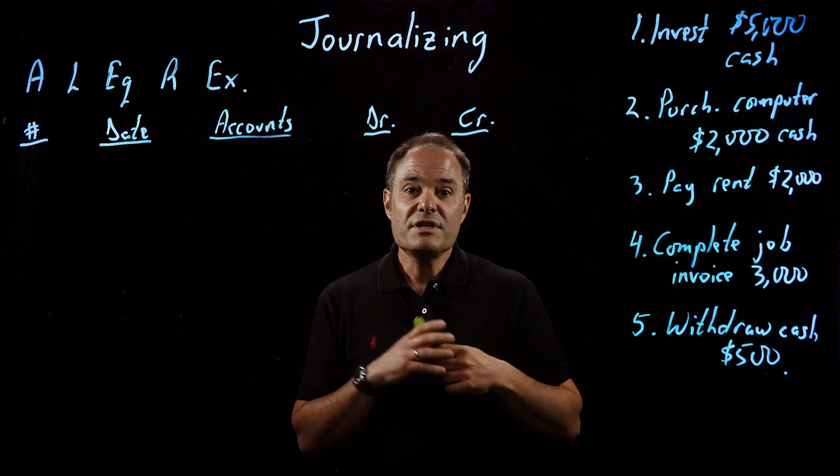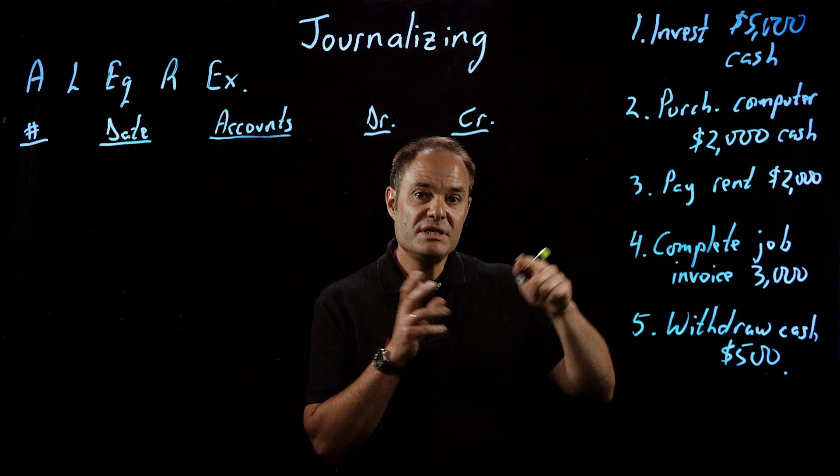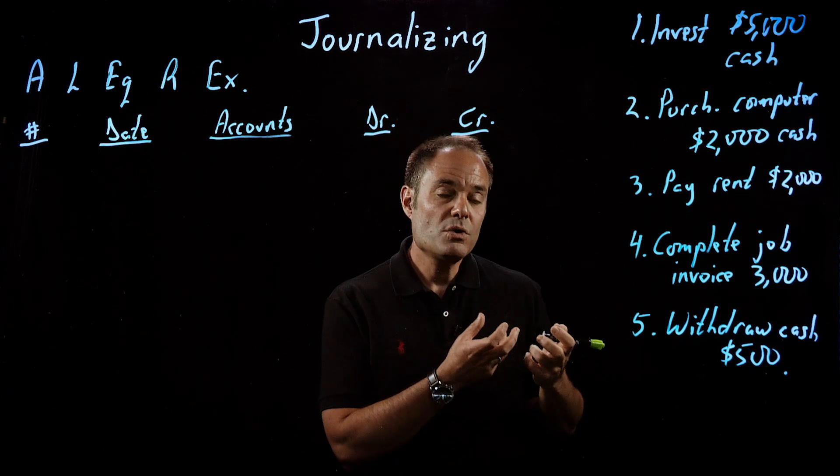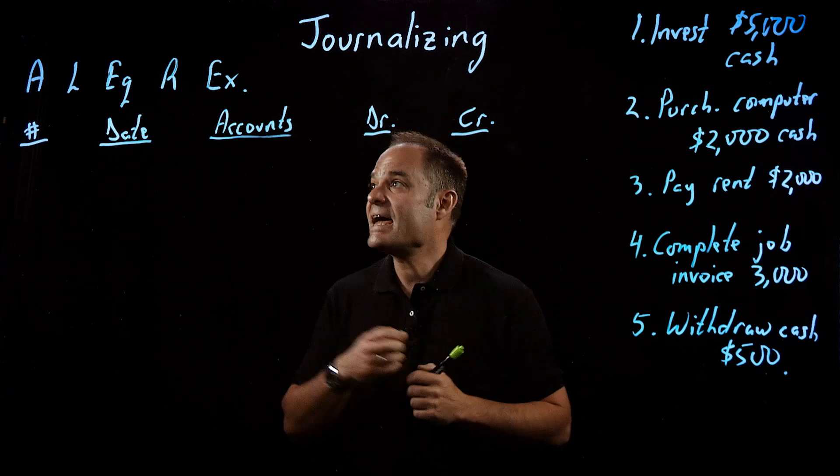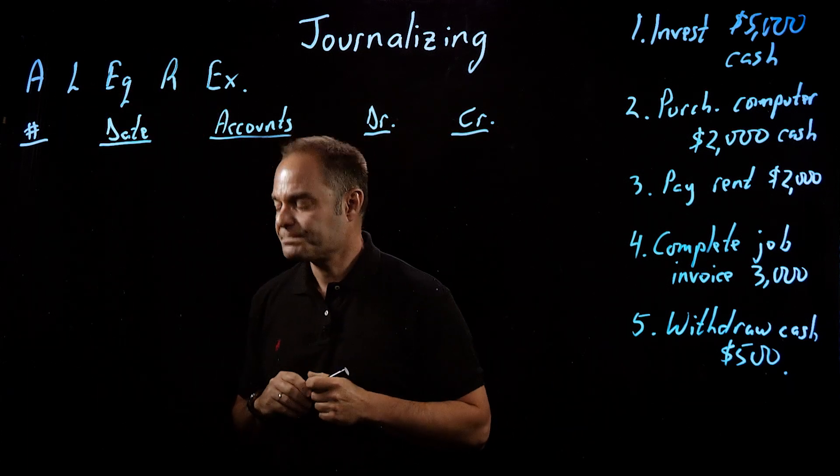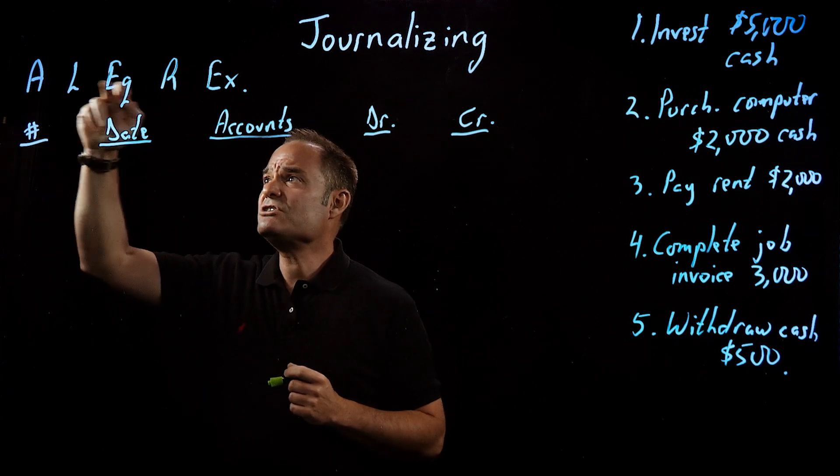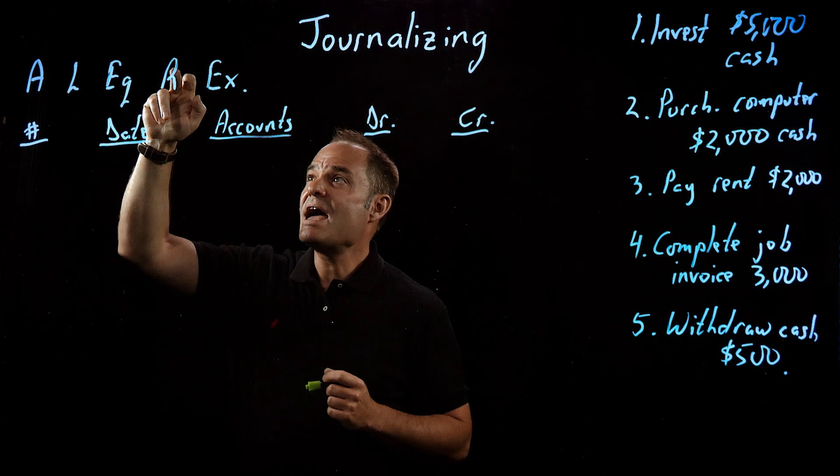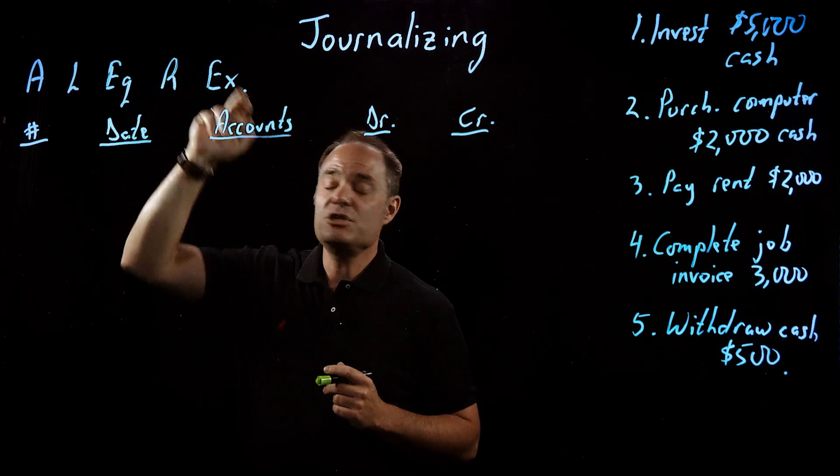Before, we recorded them in our accounts simply by increasing and decreasing various accounts. Now what we want to do is we want to record them using debits and credits. I've got a neat little tool over here in which I just wrote out essentially the accounting equation: assets, liabilities, and equities, and I've added revenue and expenses.